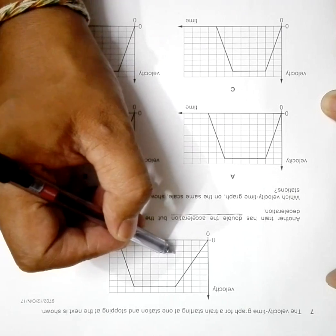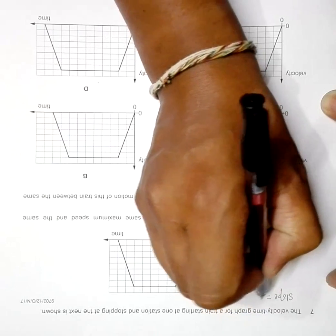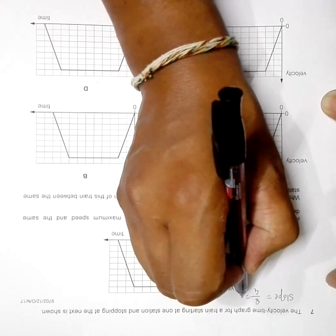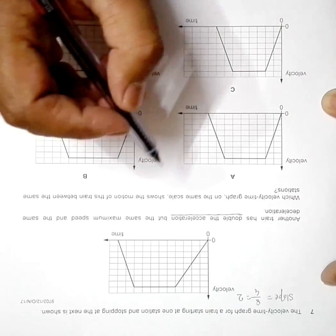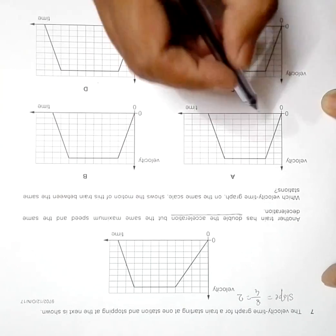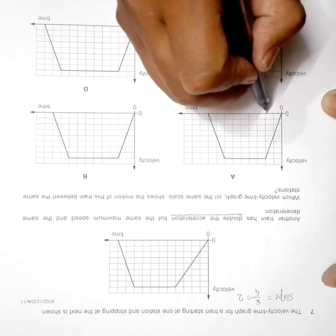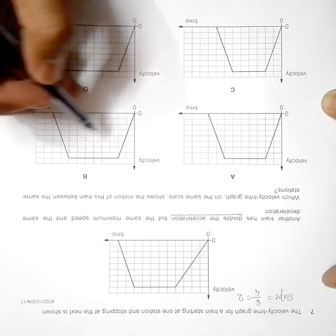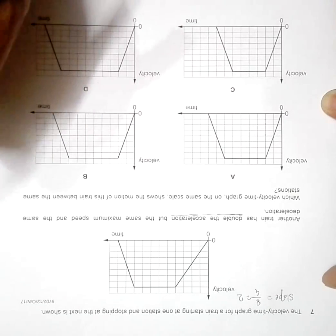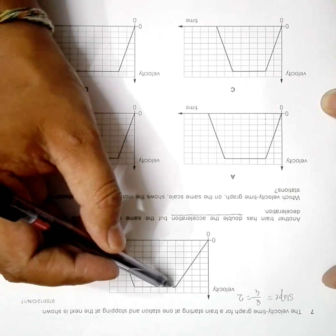So here the slope is, if I count, zero one two three four five six seven eight. The slope or gradient is equal to eight divided by four, equal to two. So that means now if acceleration is double, the slope should be two into two, four. Here if we calculate, one two three four five six seven eight and this is two, so eight by two is four. Here also eight by two four, eight by two four, eight by two four. All of them qualify.